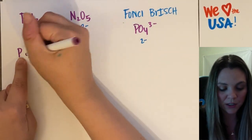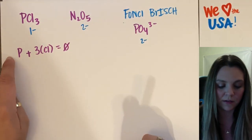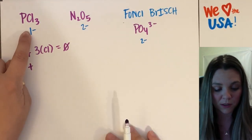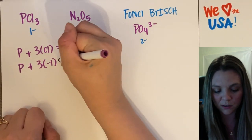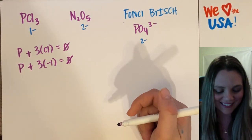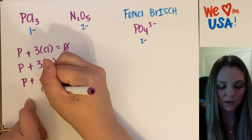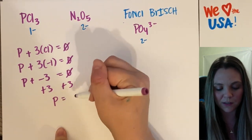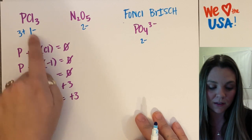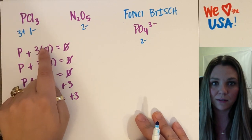For PCl3: phosphorus plus three chlorines equals zero. I know chlorine was the most electronegative and got a minus one charge, so three times negative one equals zero. Substituting: phosphorus plus negative three equals zero. Add three to both sides and phosphorus has a plus three oxidation number. So chlorine has one minus, there are three of them, and phosphorus has three plus — they add up to a sum total of zero.